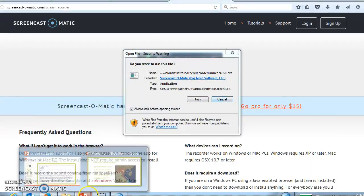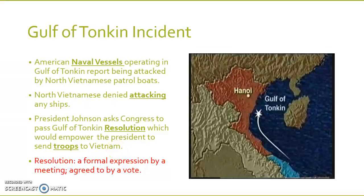As a result of that, President Johnson went to Congress and said, look, our ships were attacked. I need you to pass a resolution in response to the Gulf of Tonkin incident — it was called the Gulf of Tonkin Resolution. What it was supposed to do was empower the president to send troops to Vietnam, essentially a use of force, permission to use force. A resolution is basically a formal expression by a meeting, agreed to by a vote.